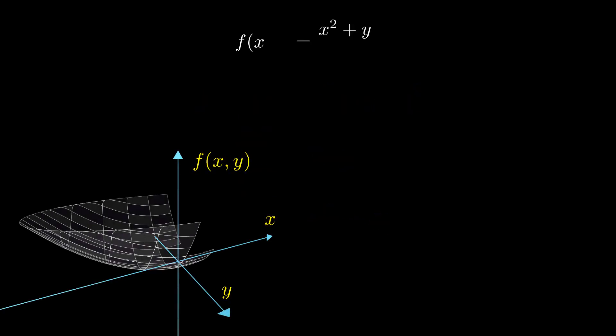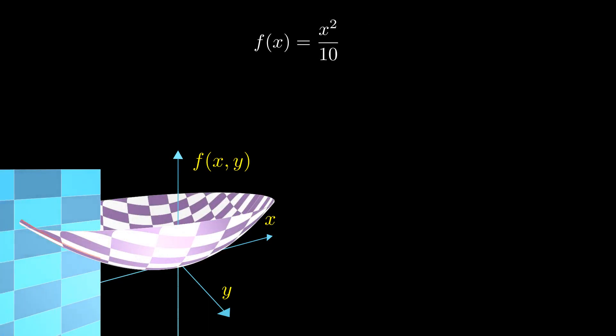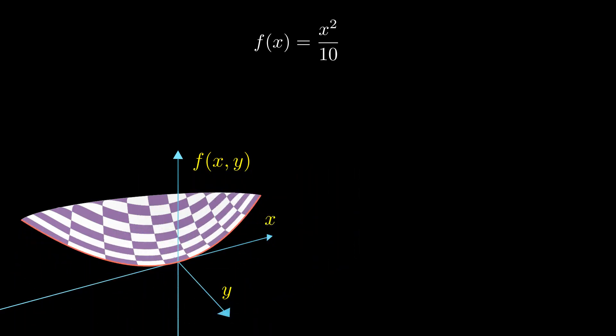To gain some geometric intuition, let's freeze y at zero. This effectively slices the graph in two. Since y is fixed, f now depends only on x and becomes a regular function of one variable. Geometrically, the partial derivative with respect to x represents the slope of the graph of f at x.